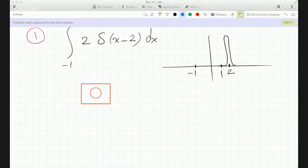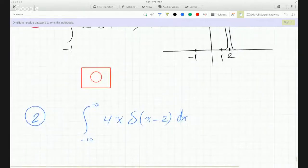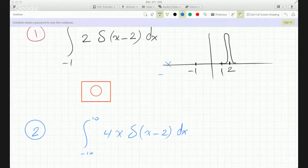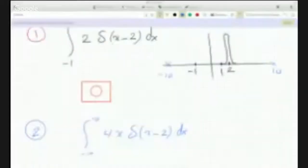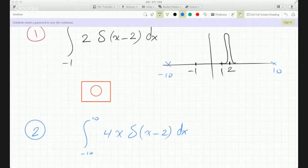Versus if you look at number 2, when you go from minus 10 to 10 for the same thing, for C is 2, 4x delta(x - 2) dx. Now here, if you shift 2 and you're going between minus 10 and 10, you are within the bounds of integration.